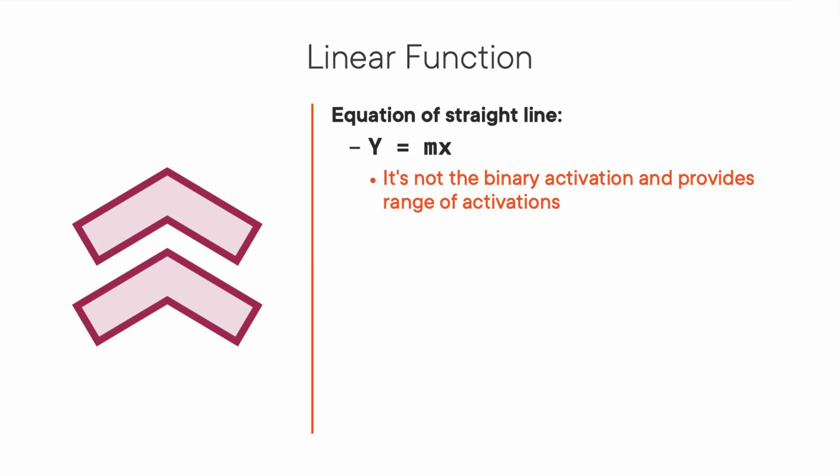The problem seems to be solved, but wait, there's another problem. Did you notice? If you're familiar with gradient descent and how it works to train a neural network, you must know that the derivative for this function will be constant. But what's the problem?